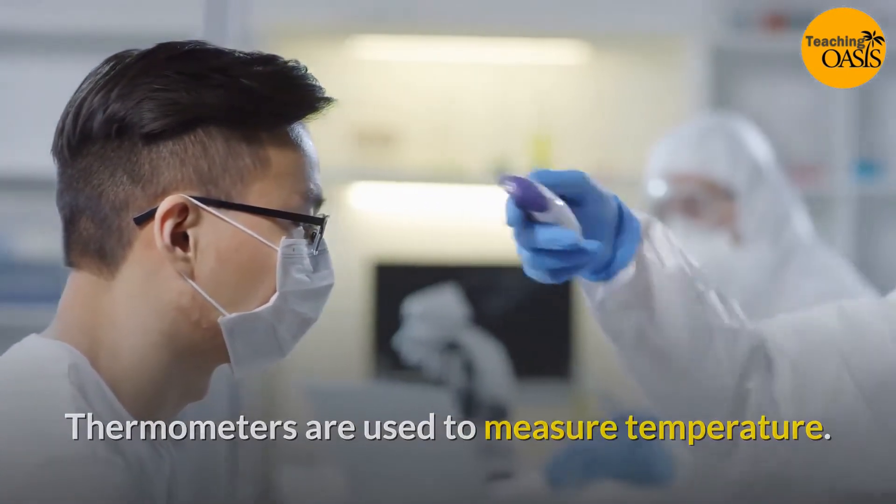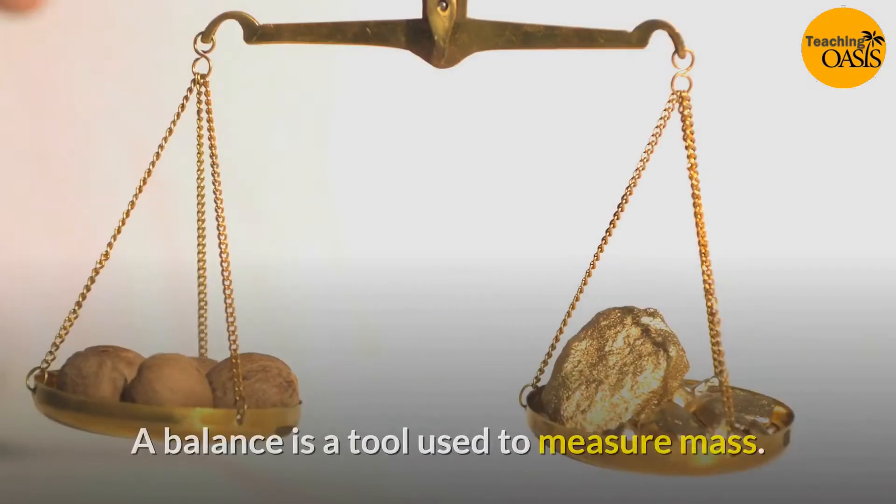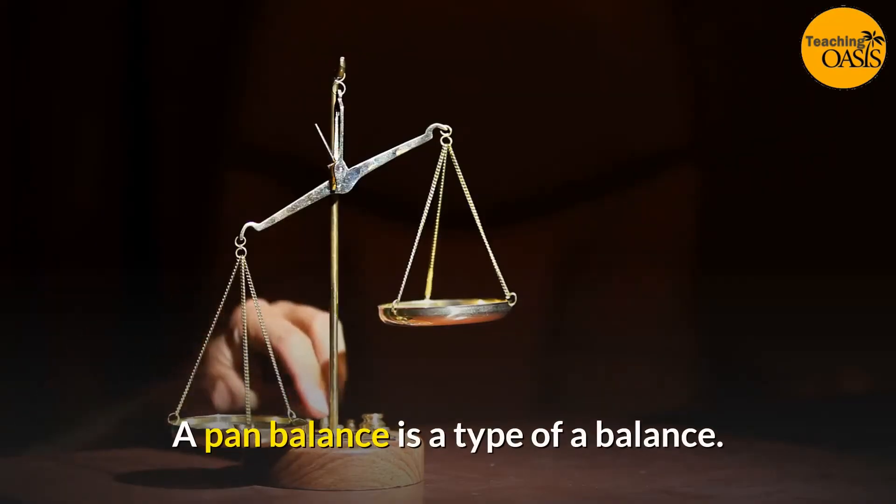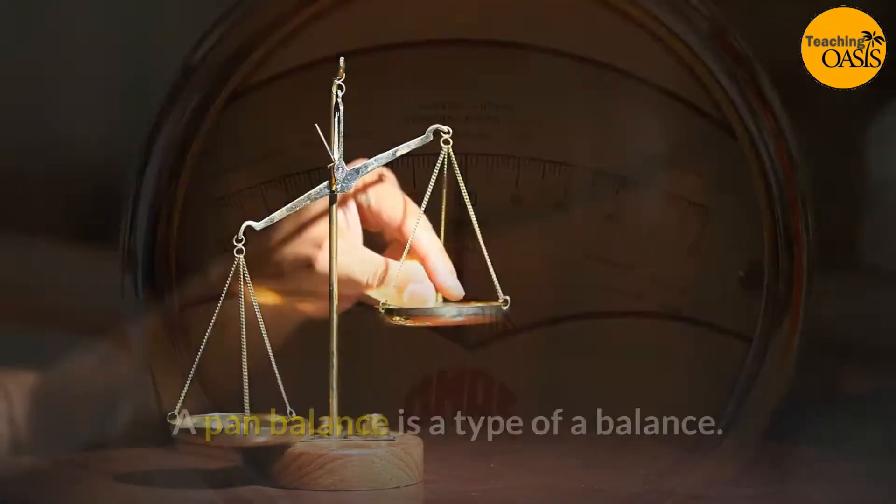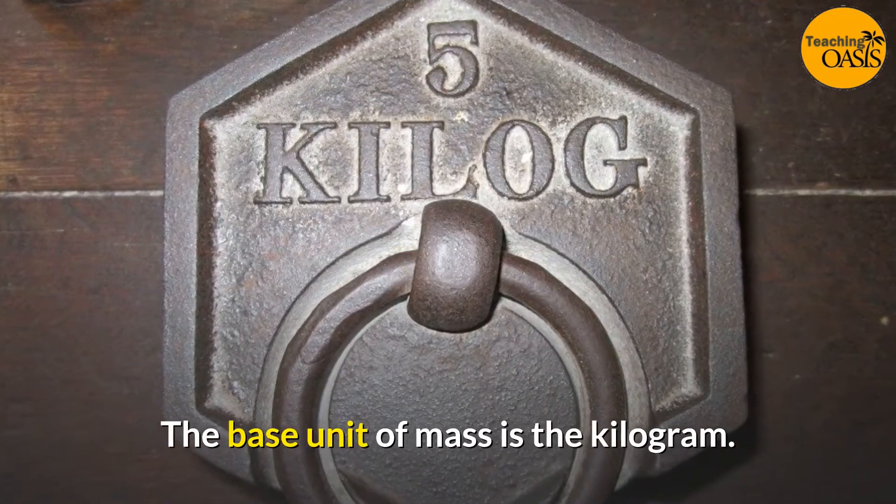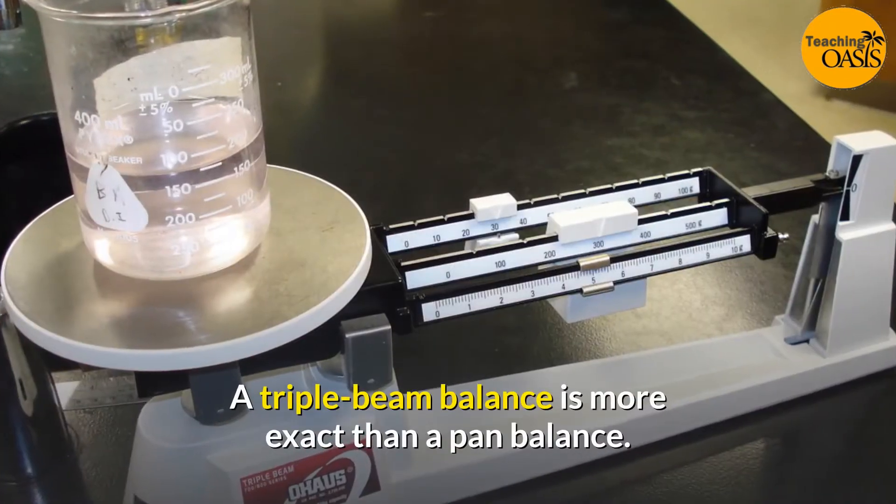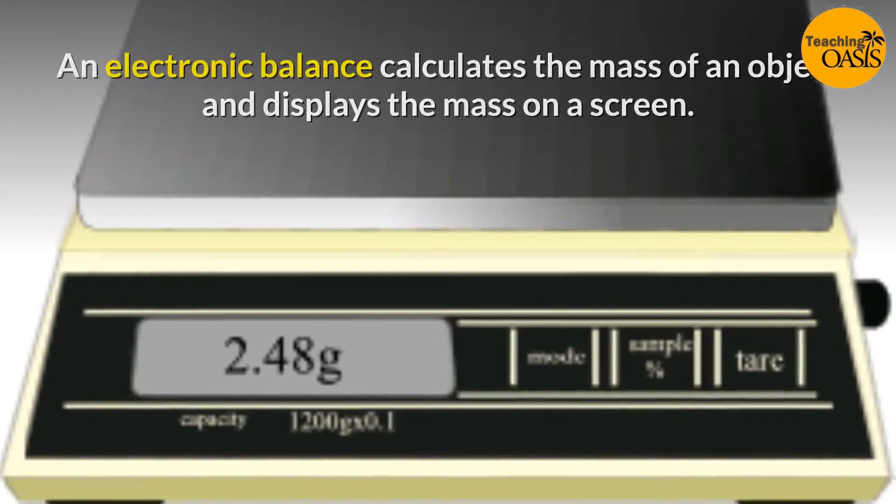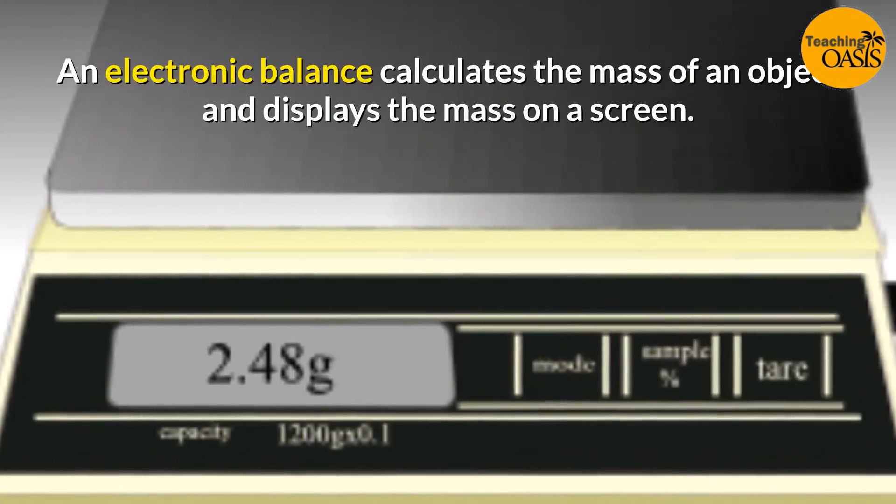Balances: A balance is a tool used to measure mass. A pan balance is a type of balance. Mass is the amount of matter in an object. The base unit of mass is the kilogram. A triple beam balance is more exact than a pan balance. An electronic balance calculates the mass of an object and displays the mass on a screen.